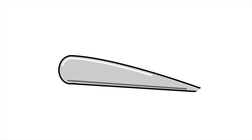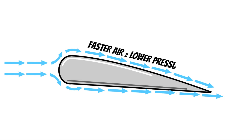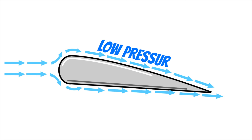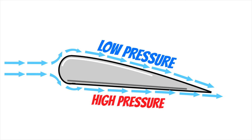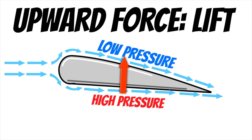Just like in a venturi, the curved surface of the upper wing forces the air on top of the wing to travel faster than the air on the bottom of the wing. This creates an area of lower pressure on top of the wing and an area of high pressure on the bottom of the wing. When you have low pressure on top and high air pressure on the bottom, the high air pressure pushes the wing up, creating an upward force — and this is what we call lift.